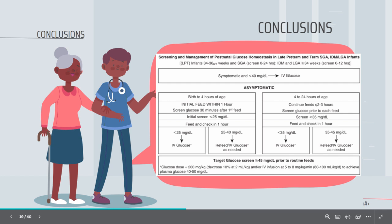While if blood glucose between 25 to 40, refeed and check it again. While after 4 hours of birth, continue feeds every 2 to 3 hours. Screen glucose prior to each feed. If blood glucose less than 35 mg per deciliter, feed and recheck again. If still less than 35 mg per deciliter, then give IV glucose.